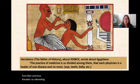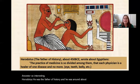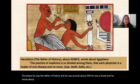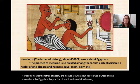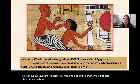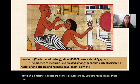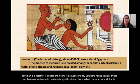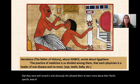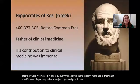Herodotus, the father of history, was a Greek around 450 BCE who wrote about the Egyptians: 'The practice of medicine is so divided among them that each physician is a healer of one disease and no more.' So just like today, Egyptians had medical specialties, which allowed them to learn more about their specific area rather than being just general practitioners.